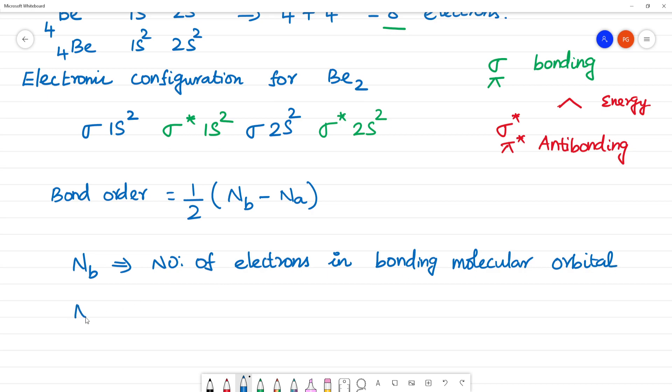What is Na? Na is number of electrons in antibonding molecular orbital.